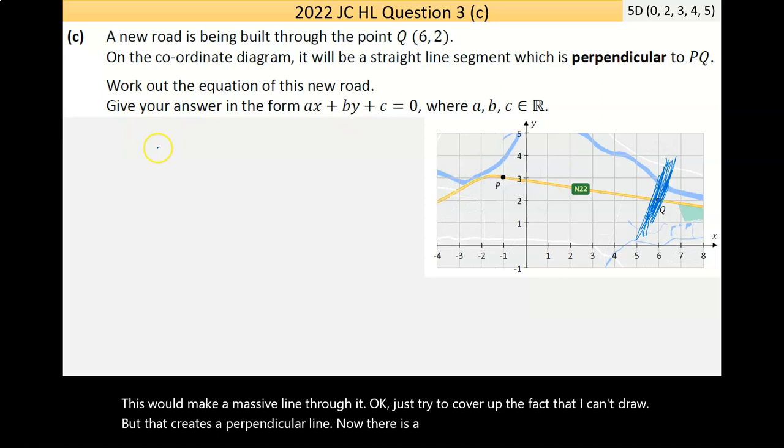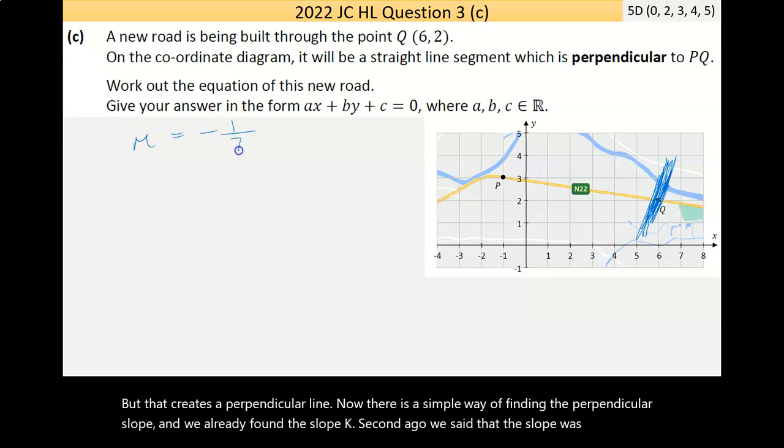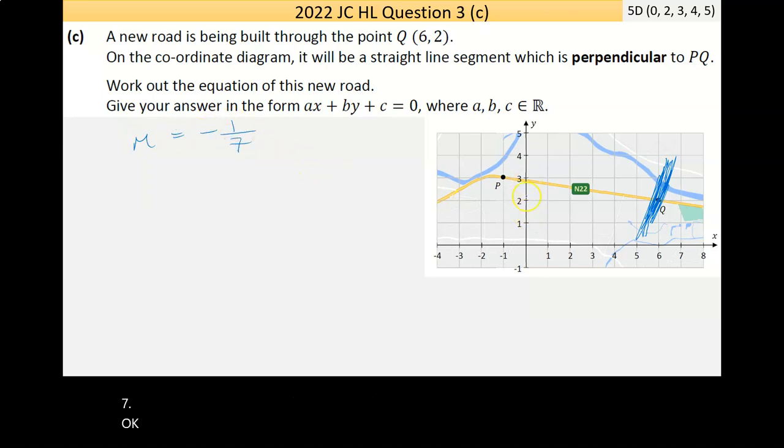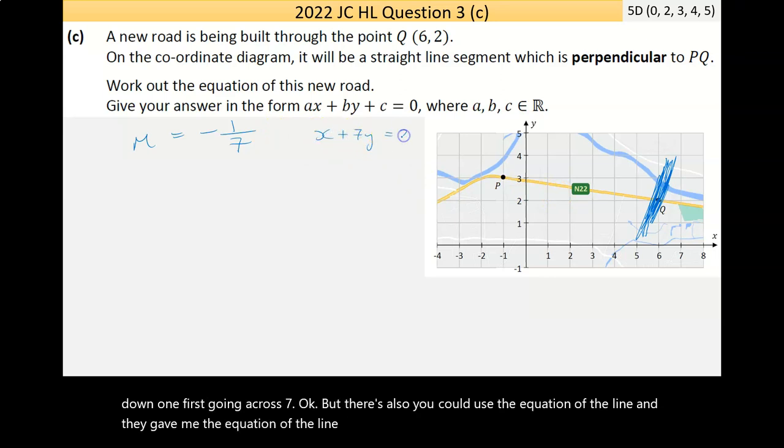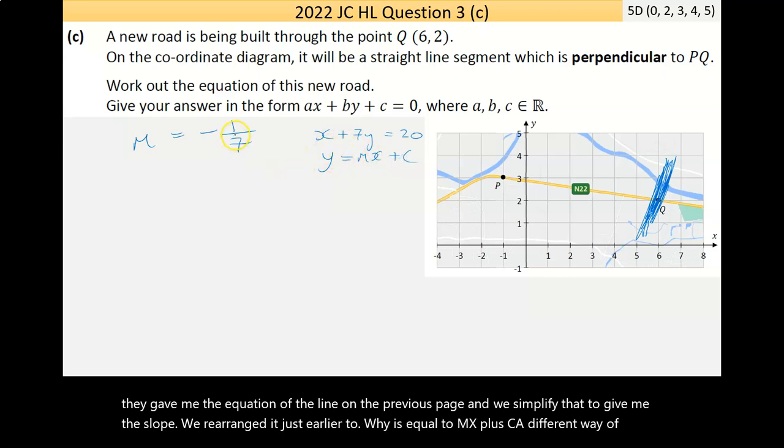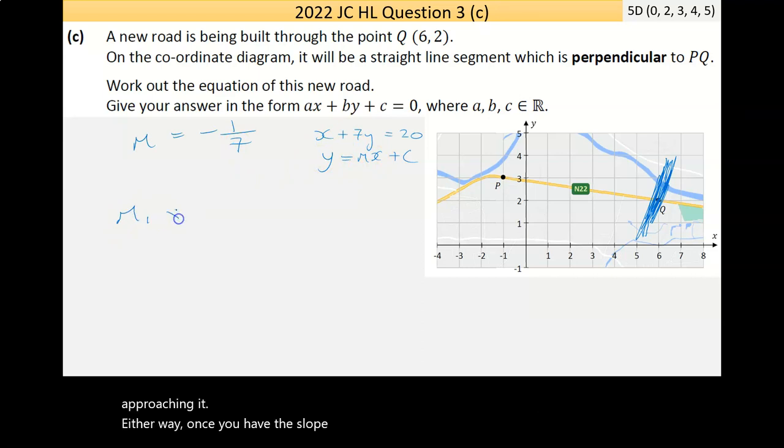There is a simple way of finding the perpendicular slope. We already found the slope. We said the slope was minus 1 over 7. I could find that by using rise over run. It's going down, so it's negative. It goes down 1, goes across 7. You could also use the equation of the line.